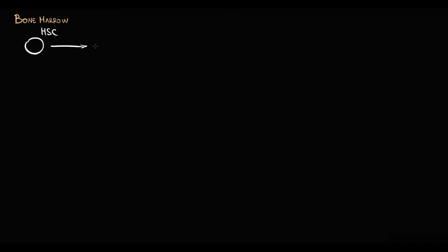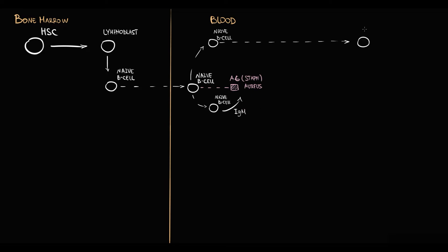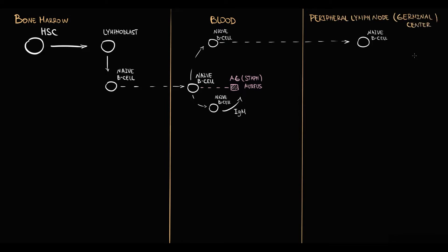As we know, multiple myeloma is a plasma cell neoplasm that is characterized by progressive accumulation of clonal malignant plasma cells in the bone marrow. Recall from the etiology of multiple myeloma that malignant plasma cells are formed due to a number of various mutations that occur to a B lymphocyte, so-called B cell.